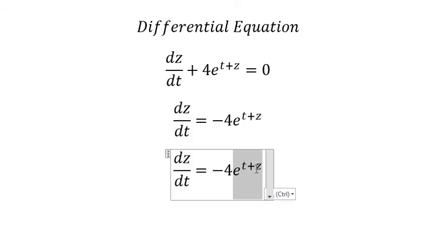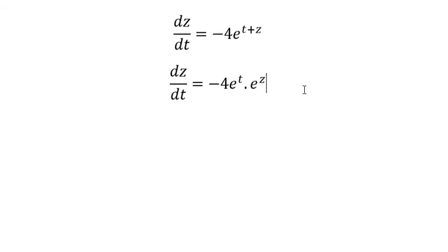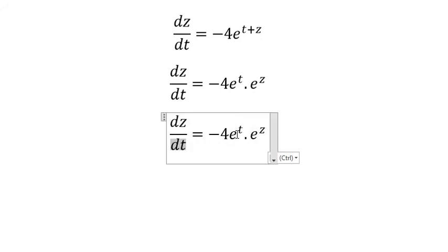We move this to the right side. This one we can write as e to the power of t multiplied by e to the power of z. Now we'll rearrange so that e to the power of z goes to the left.